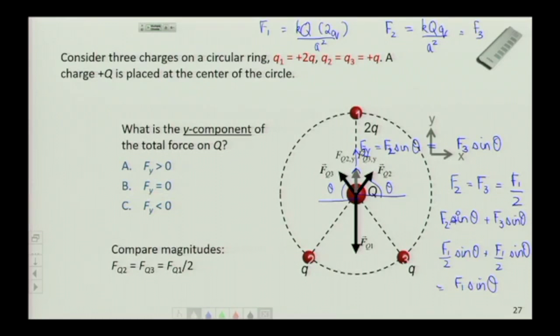For any angle theta that's not 90 degrees, that's going to be less than F1. Because sine theta, the maximum value is 1 for 90 degrees. So it will always be, this is always less than F1. So you will have that the net Y component is less than 0. Because what you will have is F1Y is negative, F2Y plus F3Y is positive but less than F1. So the negative value would win.